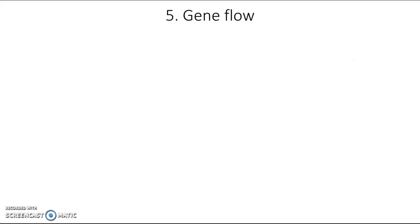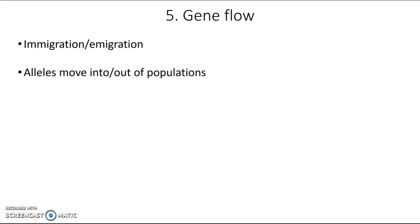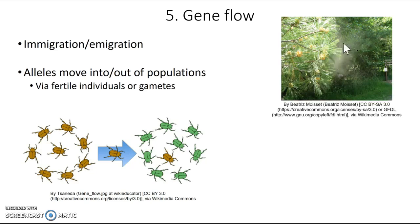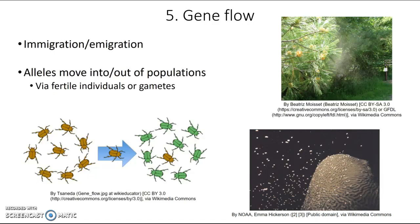The fifth mechanism of microevolution is gene flow, which refers to immigration or emigration between populations — alleles moving into or out of populations. This can happen via fertile individuals or even just gametes moving between populations. For example, if a brown bug moves into a population of green bugs, it changes the allele frequencies. This can happen even if an organism cannot move, as long as it can send gametes out. A pine tree releases pollen — essentially plant sperm — and wind can carry it to a totally new population, introducing new alleles. Similarly, corals release gametes into ocean currents that can reach entirely new populations.